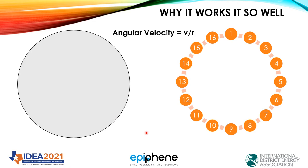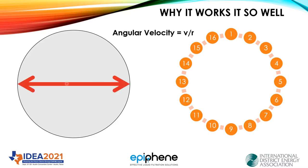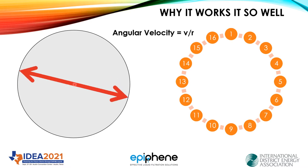Let me explain quickly why our separator works so well and why having 16 separators in a single unit is better than having one large separator. Angular velocity is the velocity around a circle, and it's defined by the velocity of the solid moving over the radius — the radius goes from the center to the outside. Let's think about an ice skater standing here with arms outstretched in a spin.